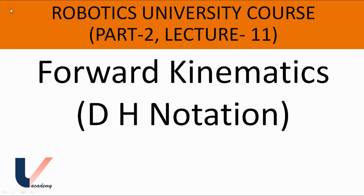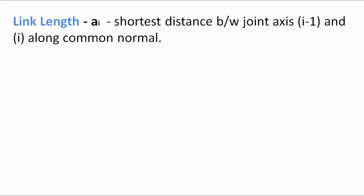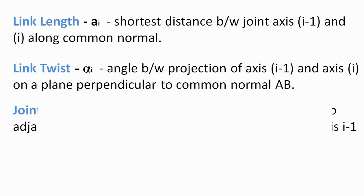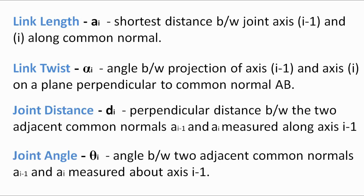Hi, welcome back. In the previous lecture, we studied about four joint-link parameters: link length ai, link twist alpha i, joint distance di, and joint angle theta i. If you have not gone through lecture number 10, I would suggest you go to lecture number 10 and then come back. Now, in this lecture, we will study about DH notation.